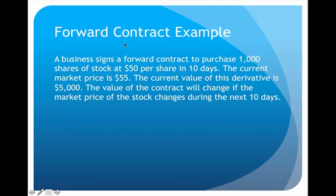A good example: say we have a business that signs a forward contract to purchase 1,000 shares of stock at $50 per share in 10 days. The current market price is $55, so that means the current value of the derivative is $5,000. If I can buy 1,000 shares at $50, that's going to cost me $50,000, but if the current market price is $55, I could turn right around and sell it and make a profit of $5,000.